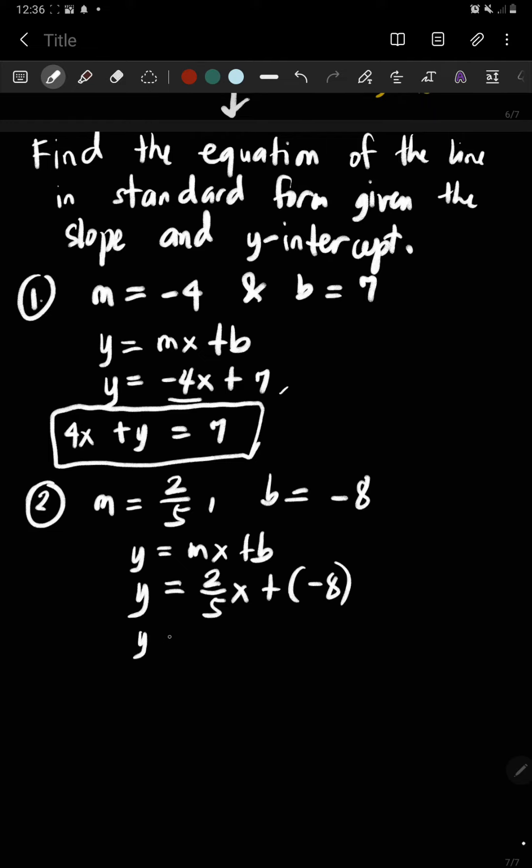So you simplify. 2/5 x, positive times negative is negative. And then since you have a fraction, you could multiply the equation with the LCD or least common denominator. But there is only one denominator which is 5. You just multiply 5 both sides. 5 times y is 5y.